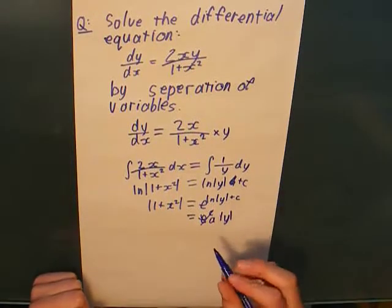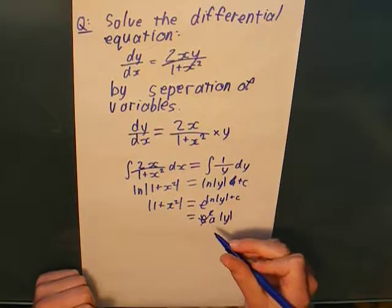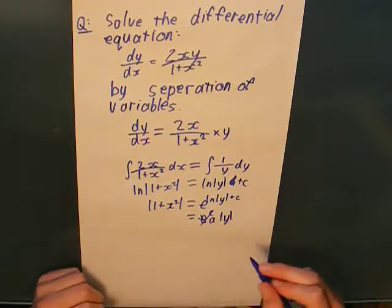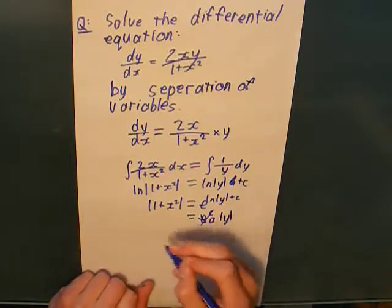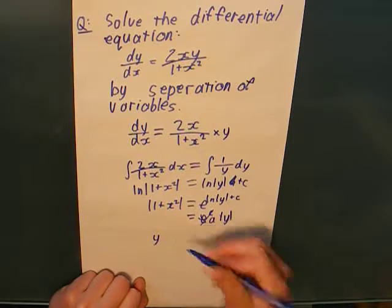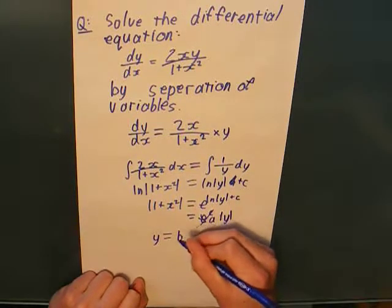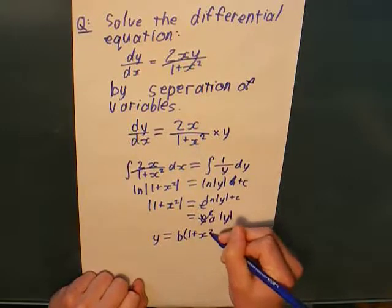So, basically, we have, doing a bit of constant renaming, which I know is a bit naughty, but here it just works. So, you have y equals b times 1 plus x squared.